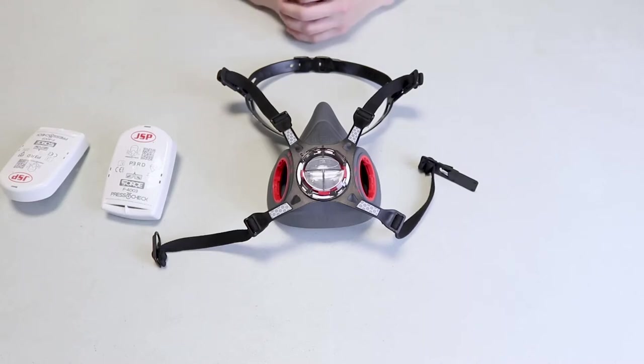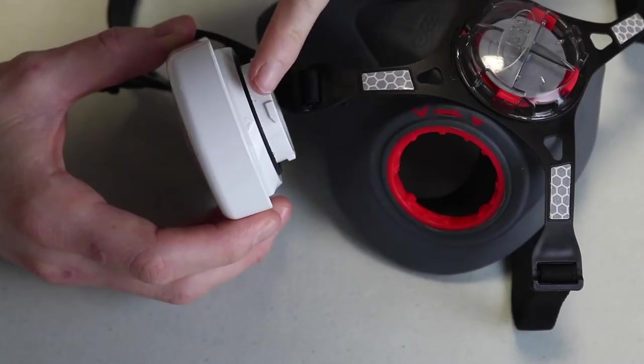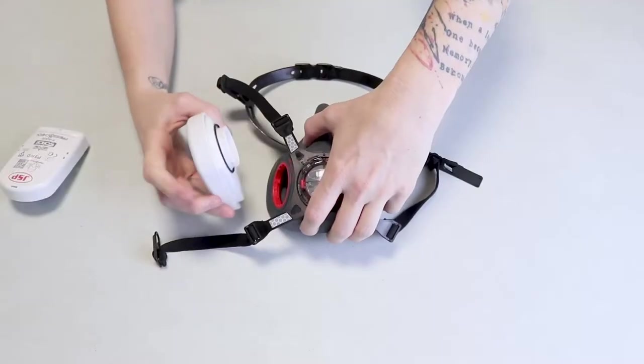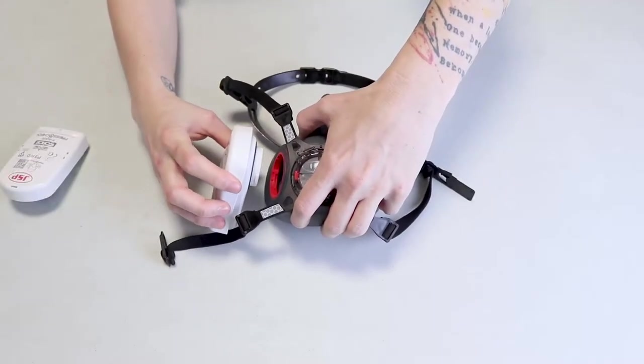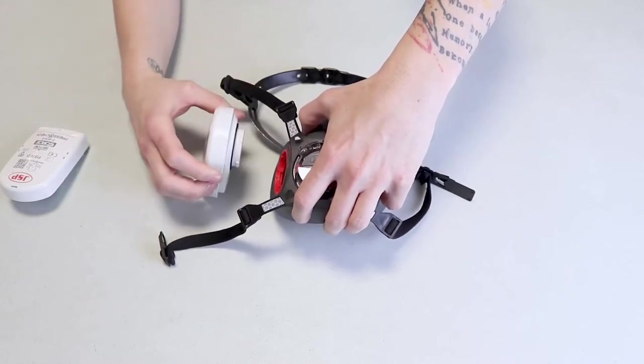When attaching the JSP filters, the filters themselves have a triangle and there's also a matching triangle on the mask. What we need to do is line these two together and twist clockwise until the fully colored-in triangle.